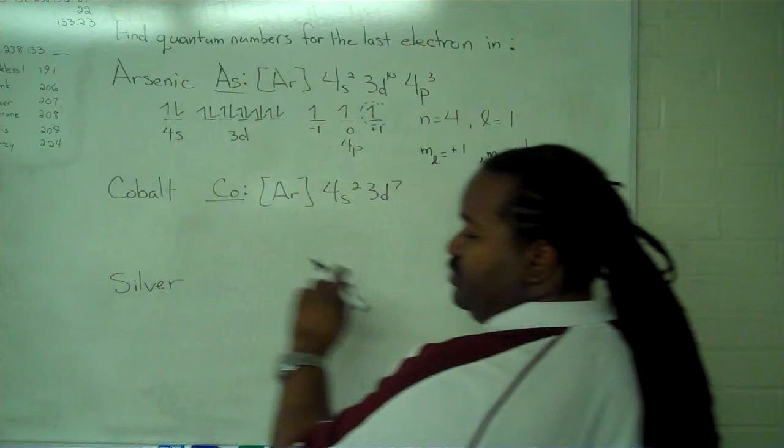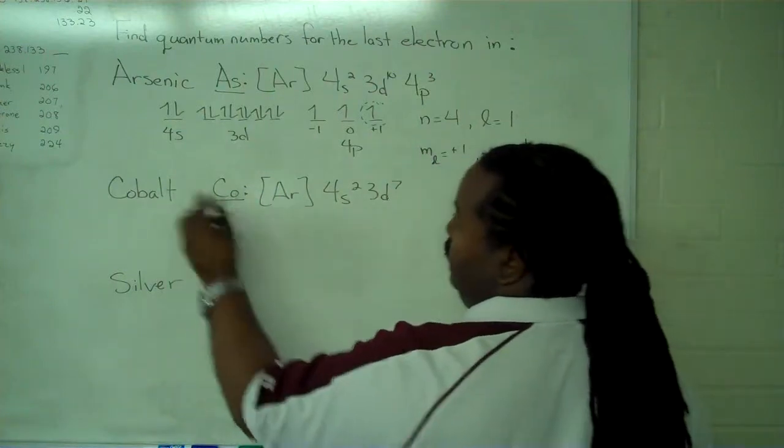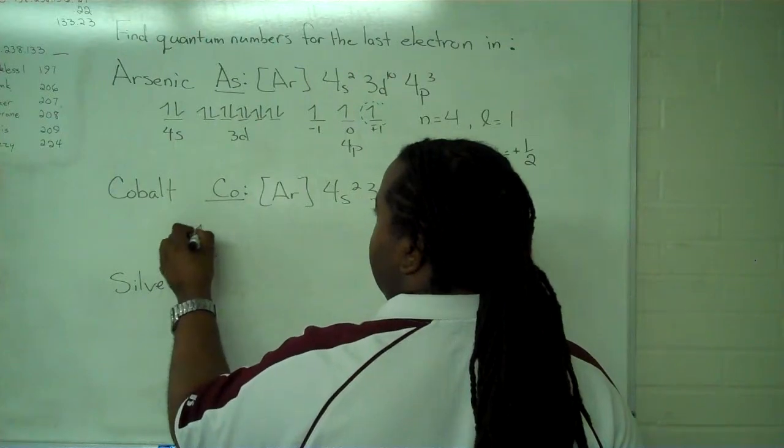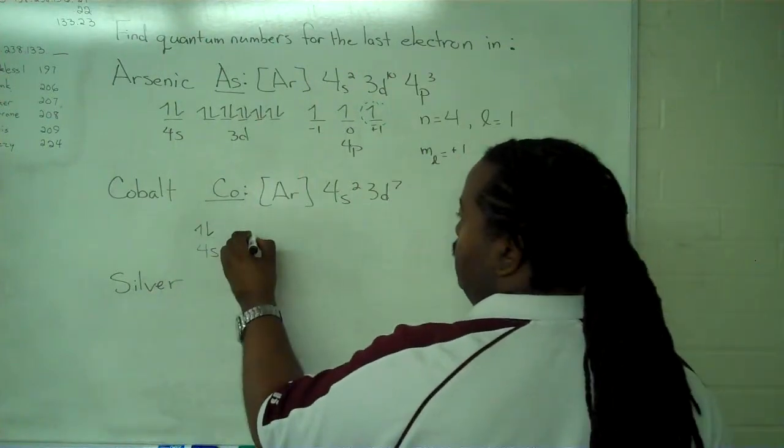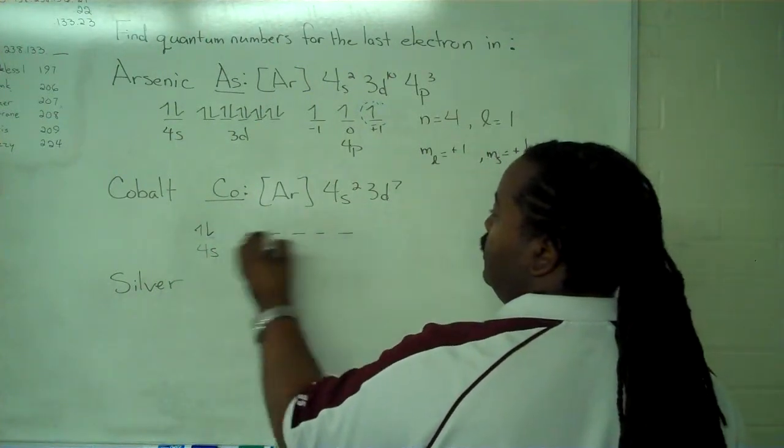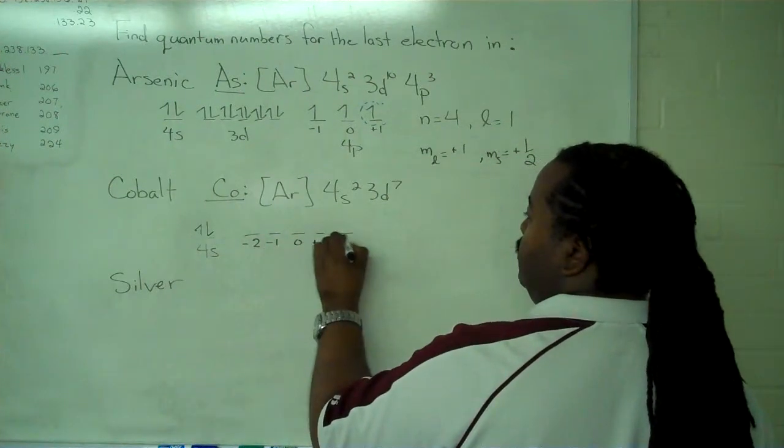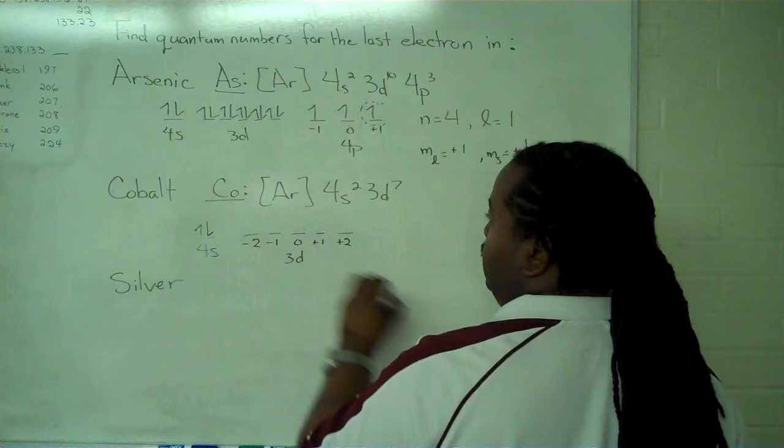So, once we have our electronic configuration, we draw the occupancy diagram. 4s has 1, 2; 3d, and it needs to label minus 2, minus 1, 0, plus 1, plus 2 for our 3d.